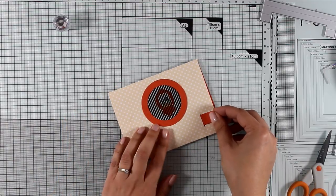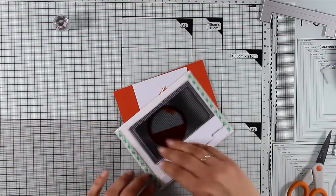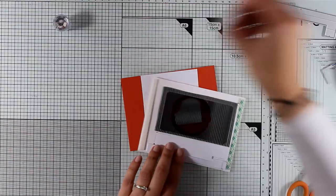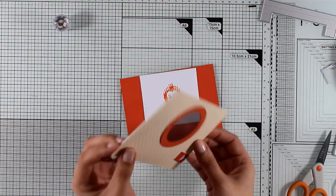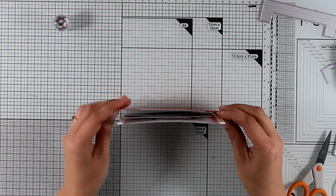This is going to stick down only the stabilizer but not the whole window, which I'll be able to move easily with the tab. Now all I need to do is remove the backing from my two foam tapes and put everything together.